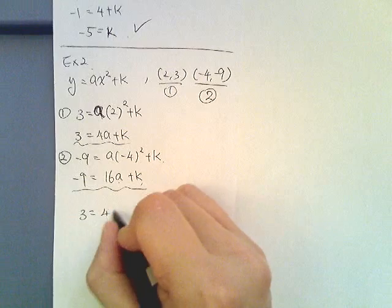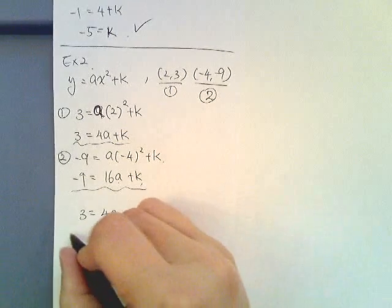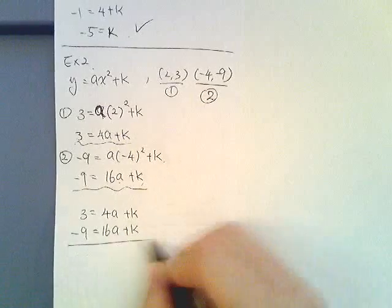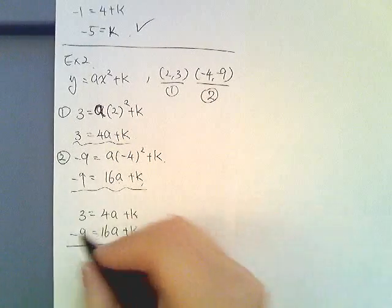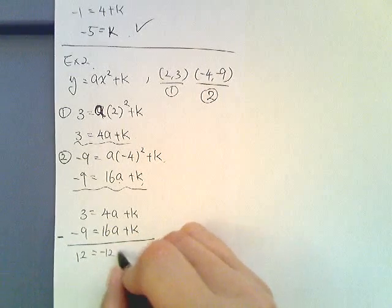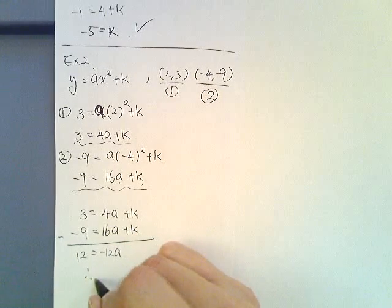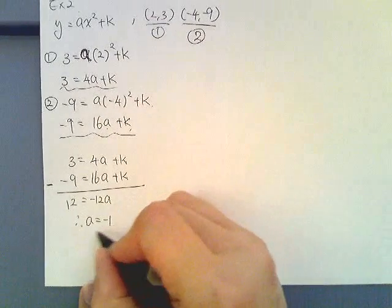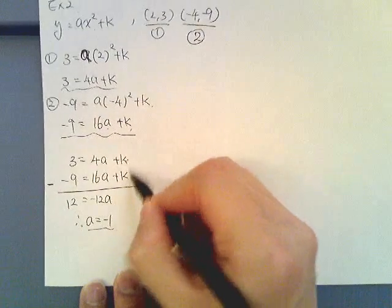3 equals 4a plus k and then negative 9 equals 16a plus k. Now since k's are the same with the same signs, I subtract it. So then I get 12 equals negative 12a. Therefore a is negative 1.